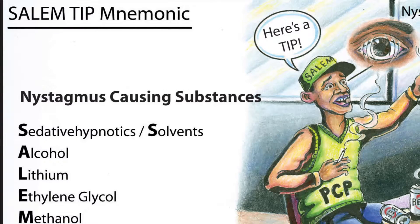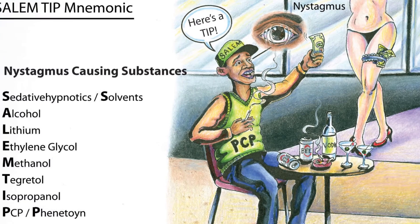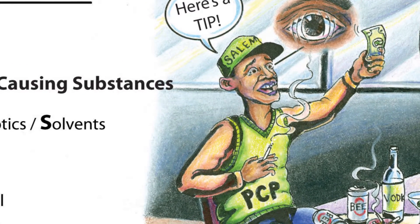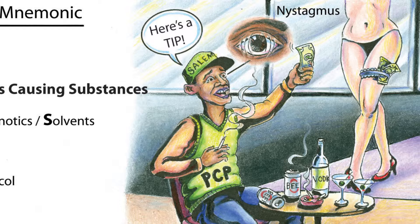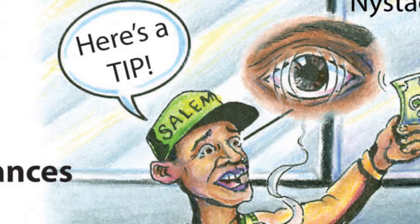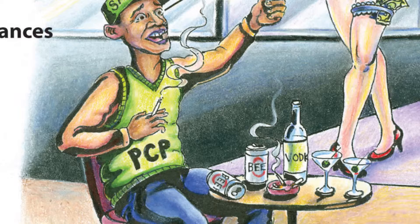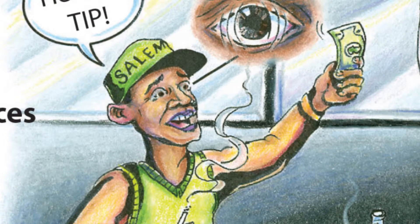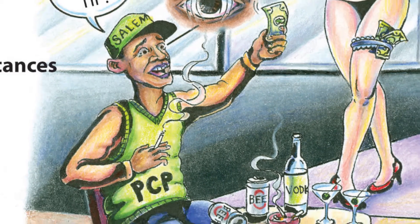In this illustration, we've drawn a gentleman enjoying some Salem cigarettes, offering up a tip at the gentleman's club — a very generous gentleman here, exhibiting signs of nystagmus. He's wearing his Salem cigarette cap and also enjoying some alcoholic beverages. His shirt says PCP, and he's drinking alcohol.